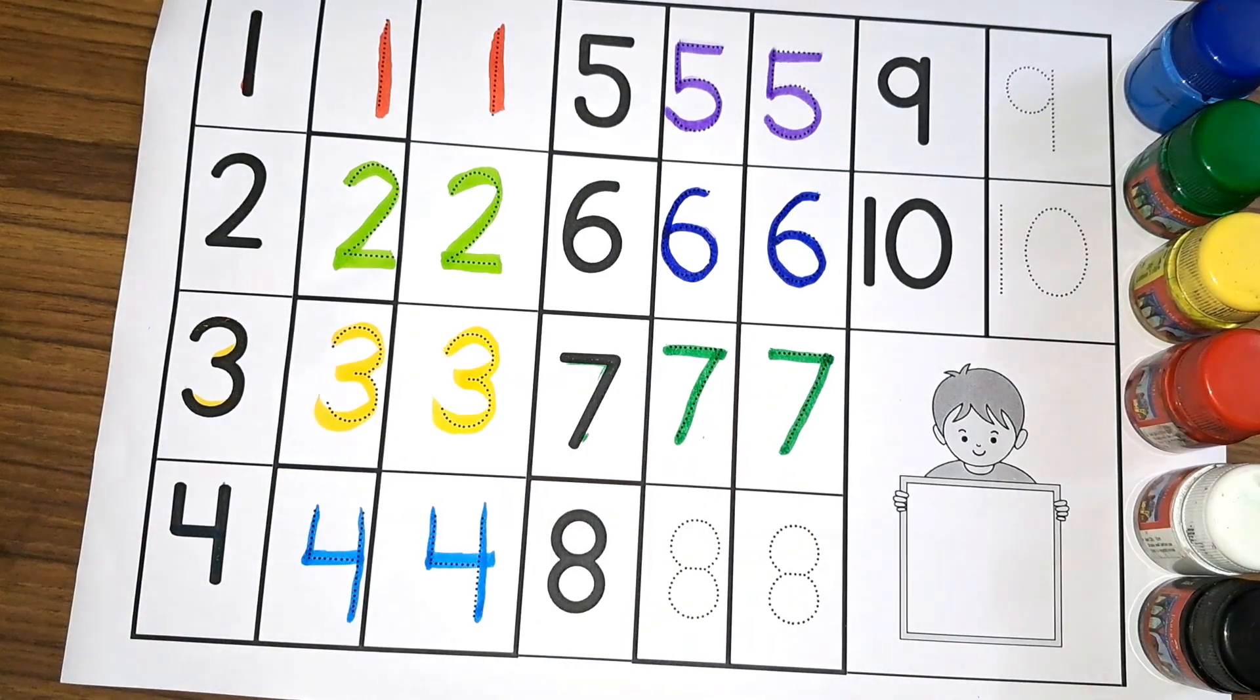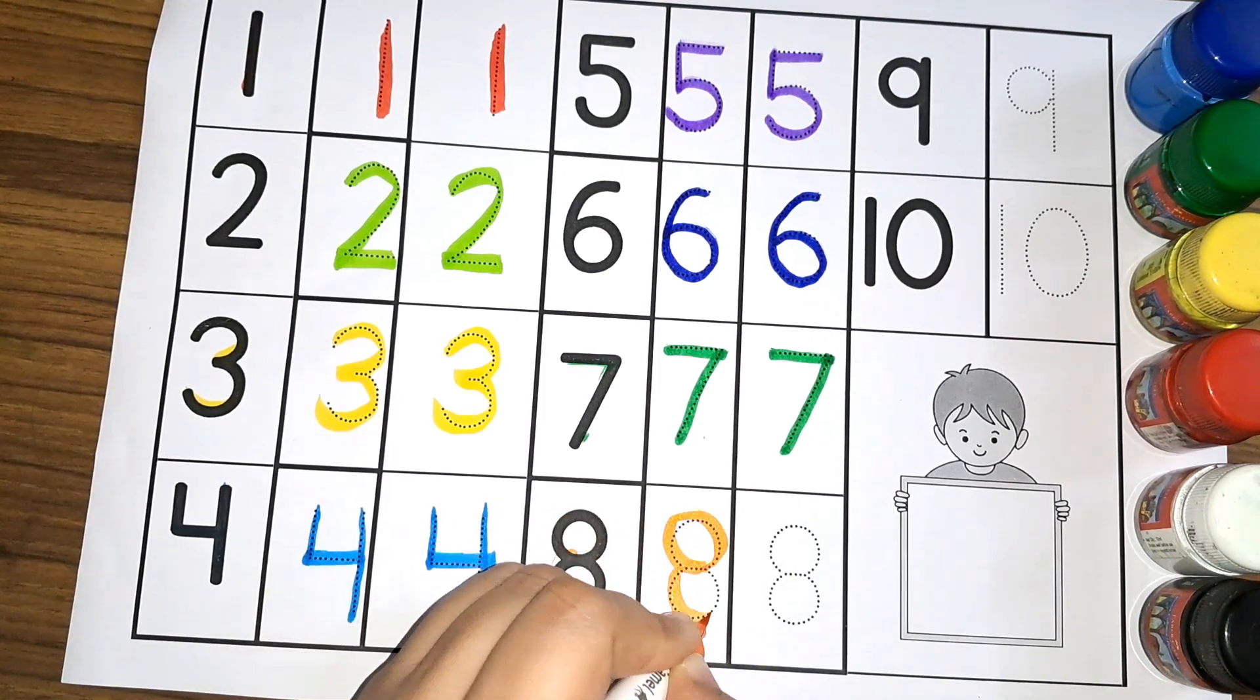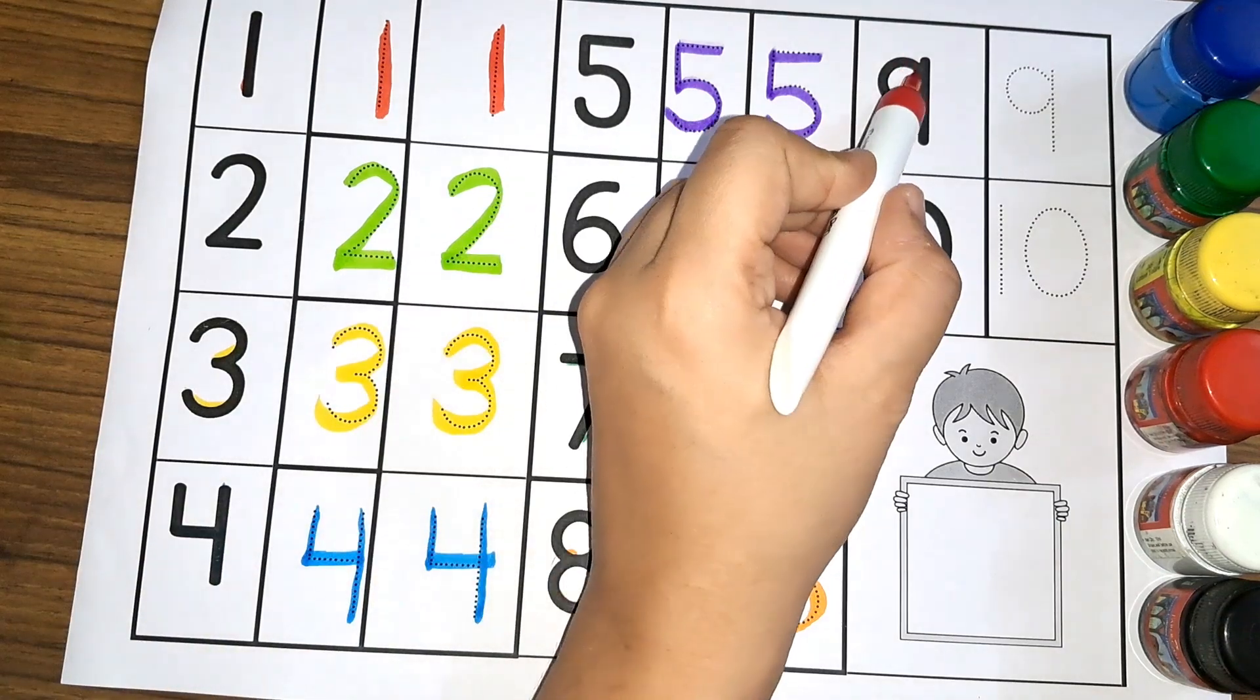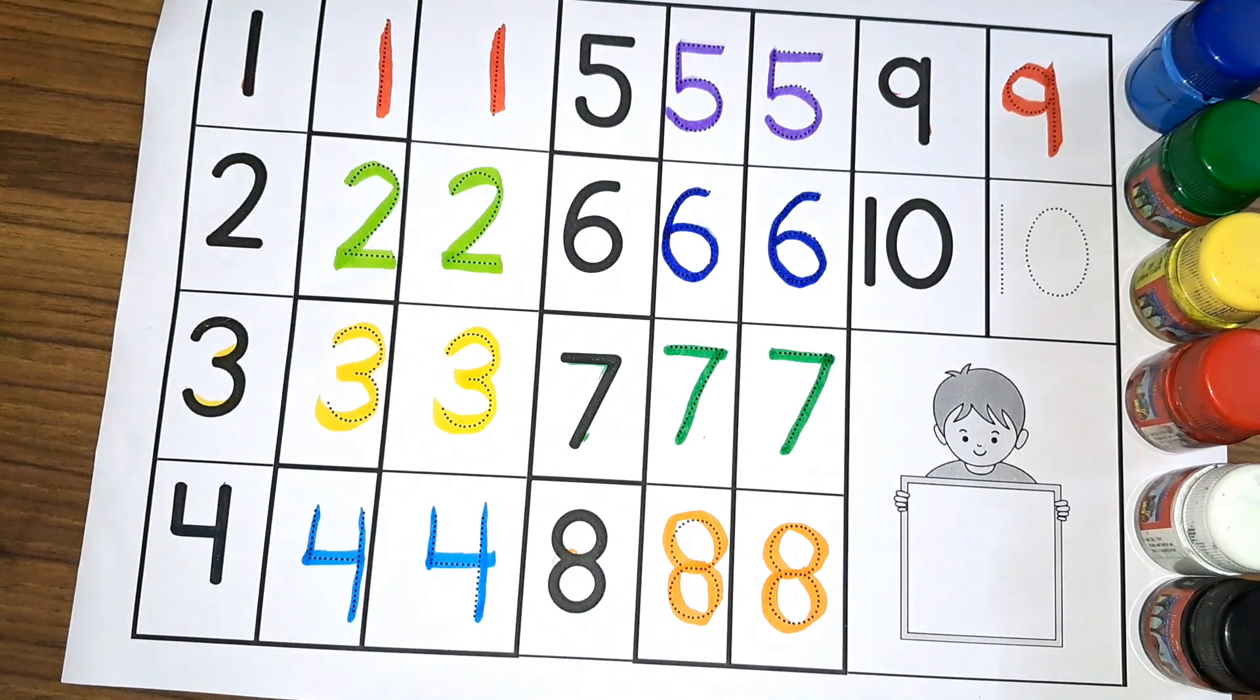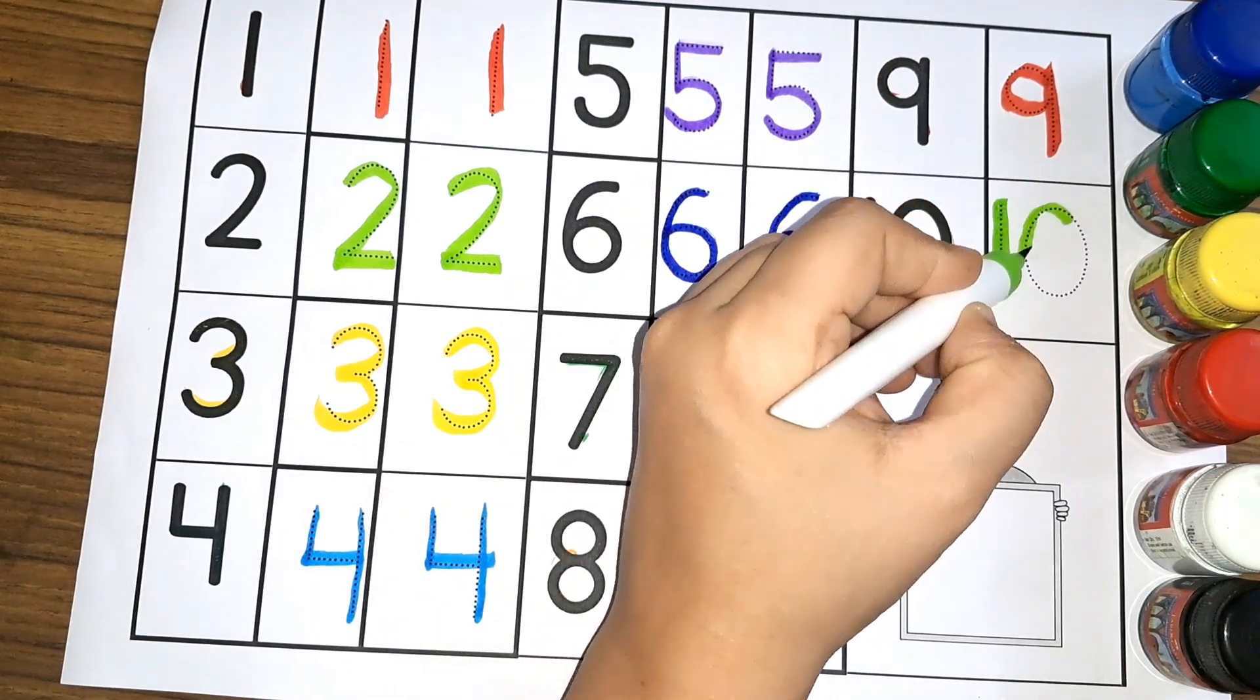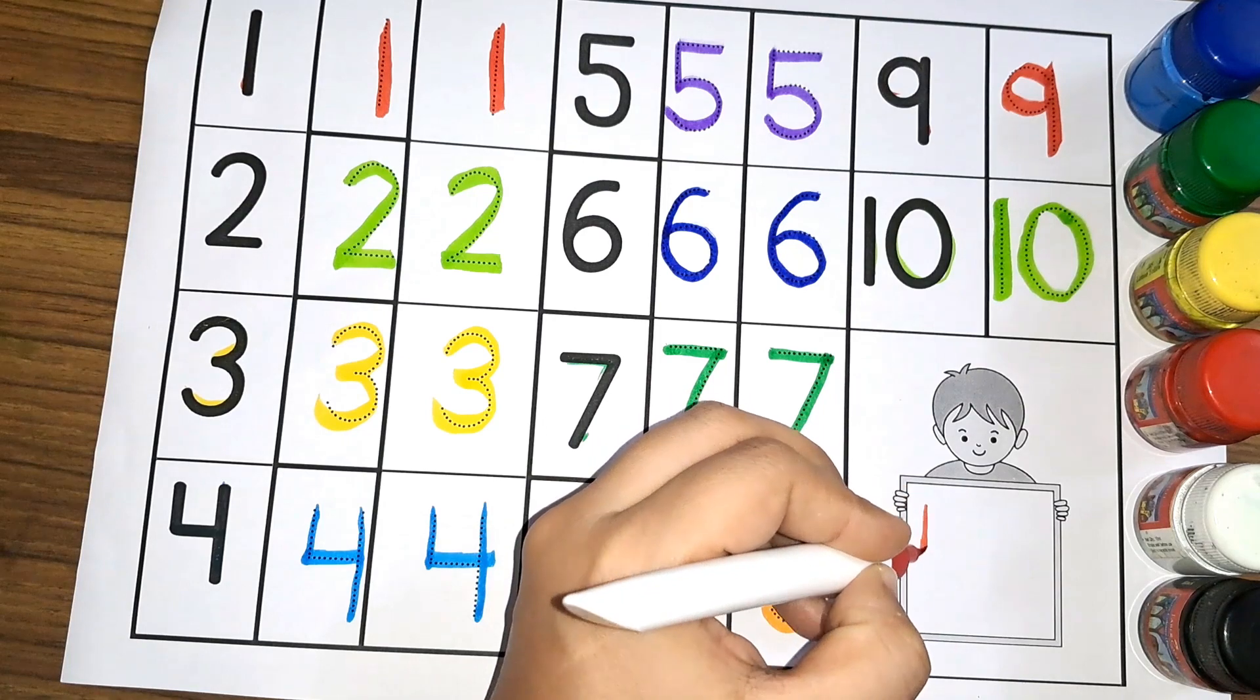Number eight, number eight, number eight. Number nine, number nine. Number ten, number ten, number ten. We have learned numbers one to ten.